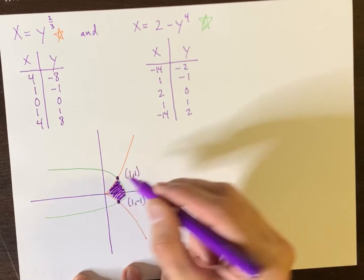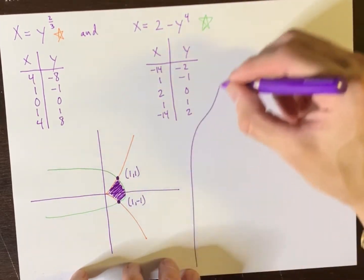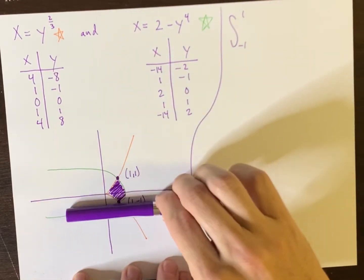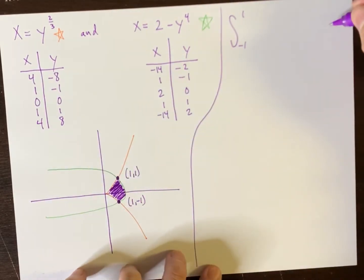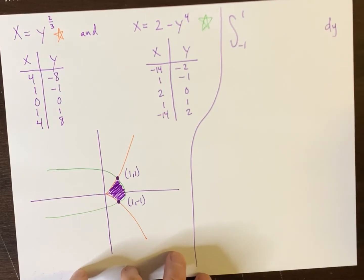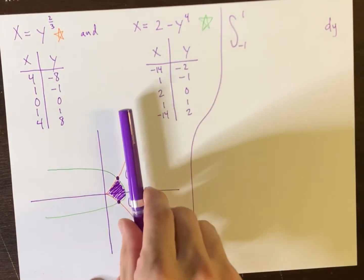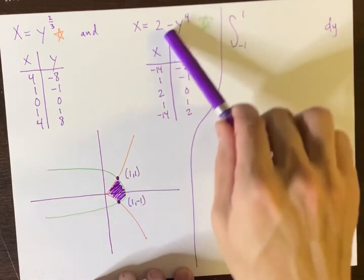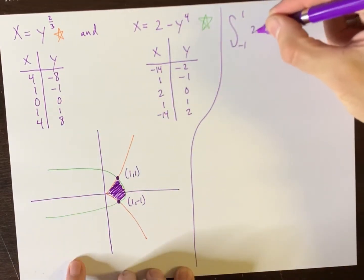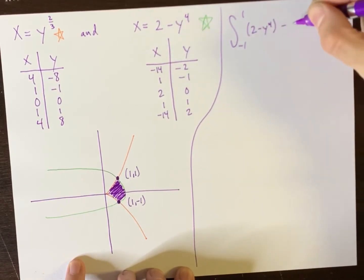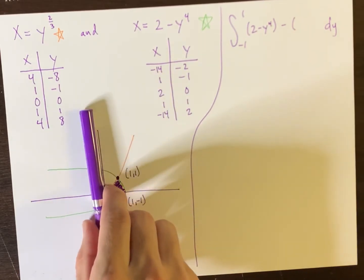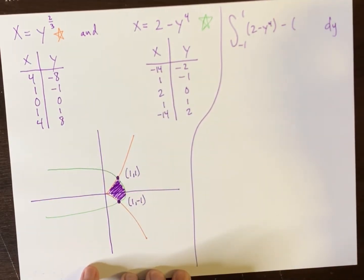And so now we know our limits of integration, negative one to one, because we're going from the lower to the higher. And this will be in terms of dy. So we can go the right function minus the left function, where the rightmost function is the green one, this one here.